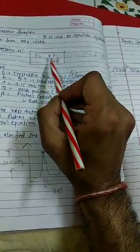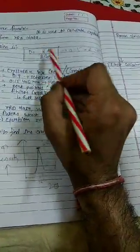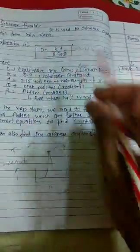This is the constant, this is the wavelength, and this is the full width half maximum. Once we have beta and theta, we would be able to calculate the overall grain size, which is in nanometers.